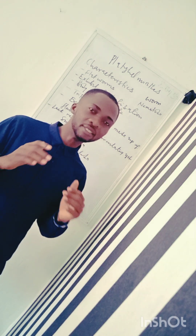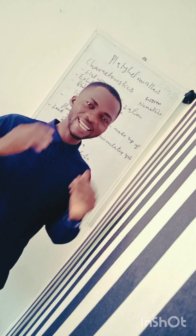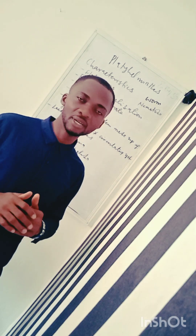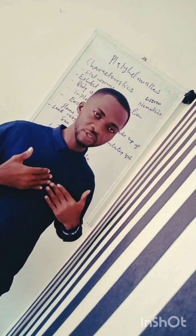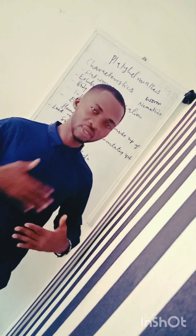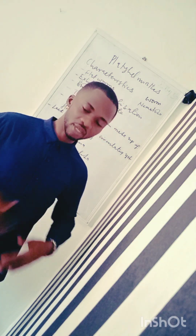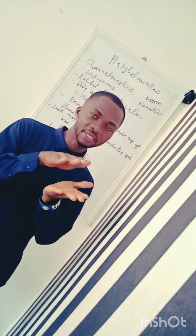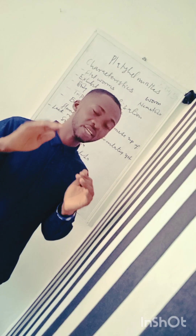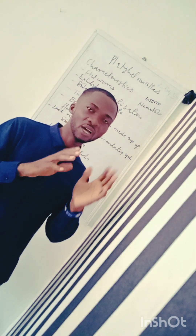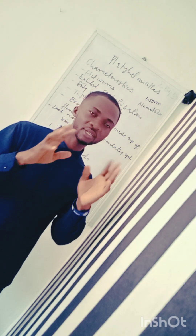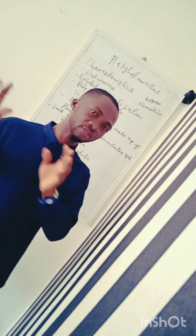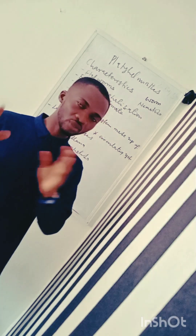These are the group of worms that are ventrally flattened. Within their ventral view and their back, if you look at them, it looks like a tape — especially in the tapeworms. We'll have two main categories: we'll have the Trematoda and we'll have the Cestoda.